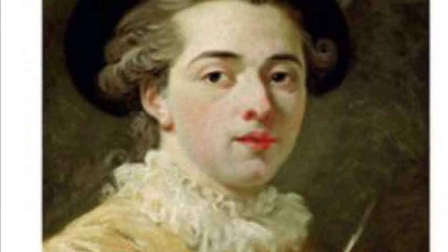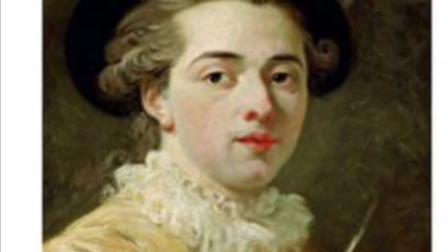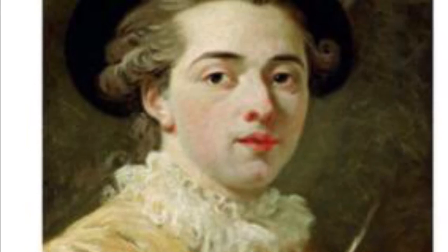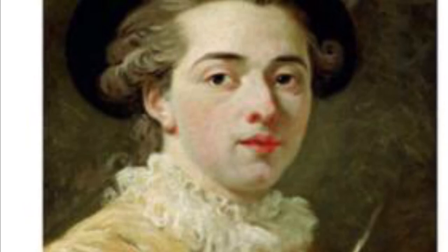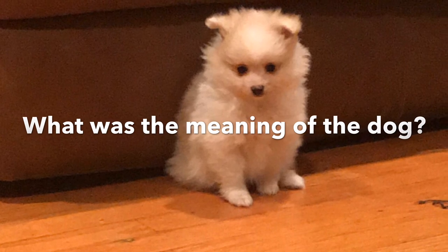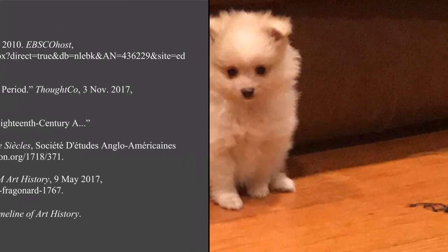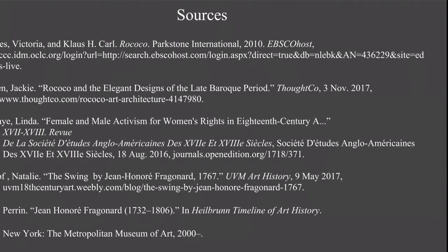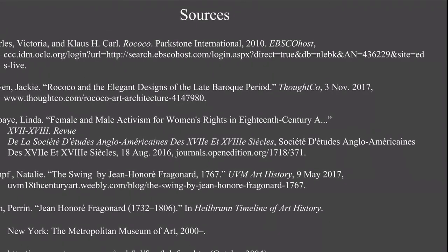In conclusion, Fragonard implements the Rococo style in The Swing perfectly. He shows joy, happiness, and lust in the painting. He also uses a lot of symbolism with where everything is placed and what he desires to implement in the picture. We also need to know the culture in which the painting was made to fully understand what is happening in the painting and all the symbolism that is in it.